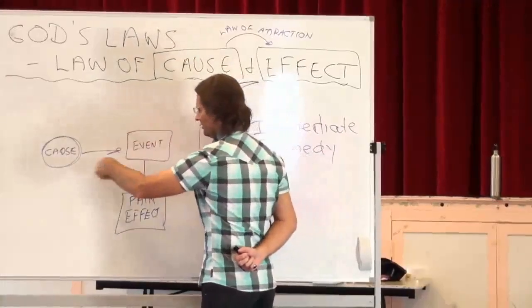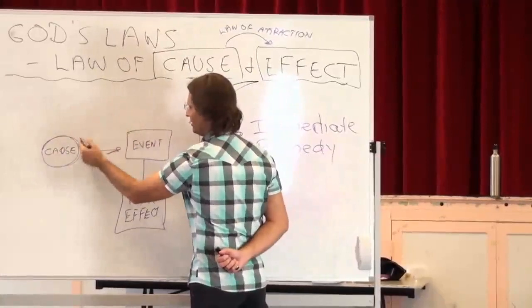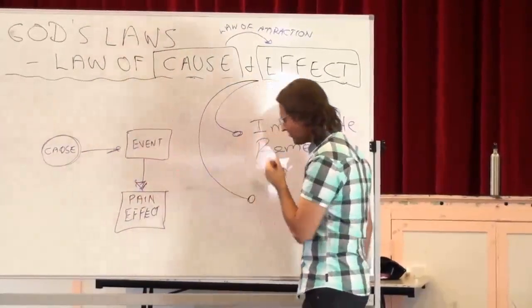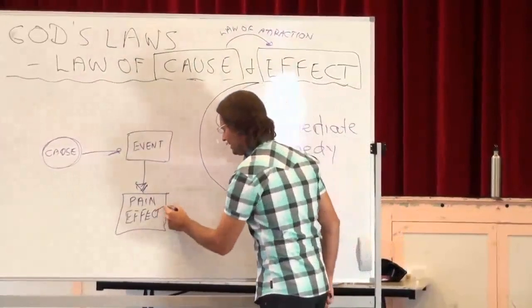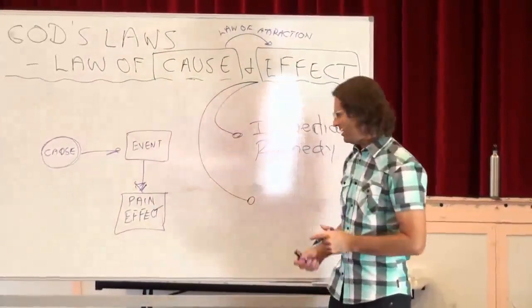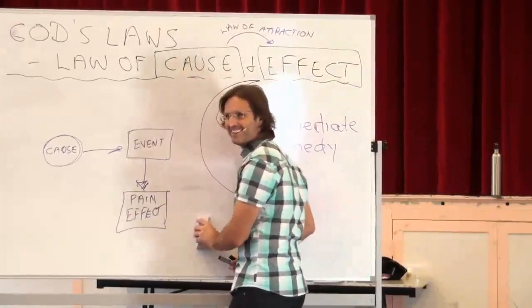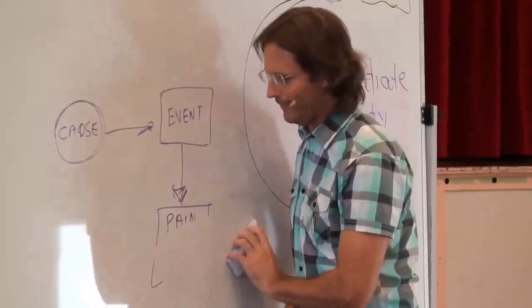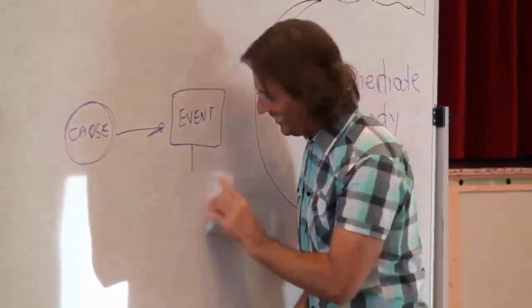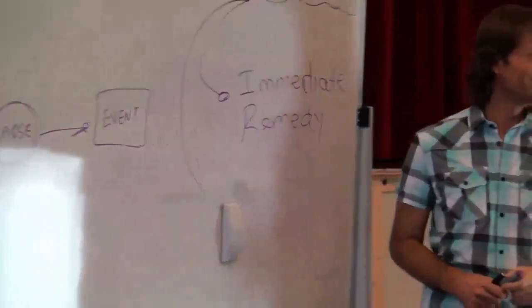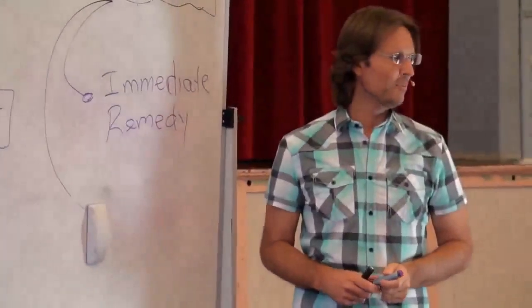So the law of attraction operates between the cause and effect. The event is actually all about the law of attraction, and we have the pain-based effect. Then what we try to do is we try to rub out the effect. Nobody saw that. It never happened.